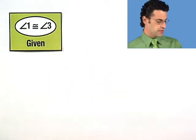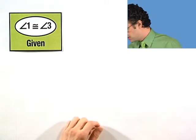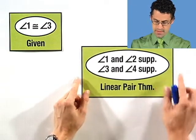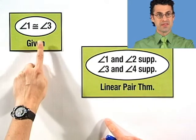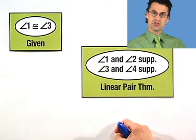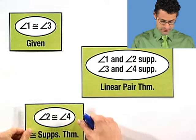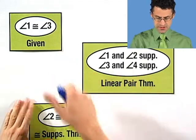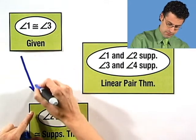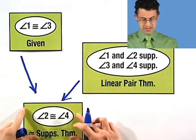And then what do we do with that given? Well, notice that we use the linear pair theorem to get that those two sets of angles are actually supplementary. So, in fact, I use this fact together with the given to make what conclusion? Well, I conclude that angle 2 is congruent to angle 4. So putting these two results together, I use this, and I use this fact, and that produces this fact.